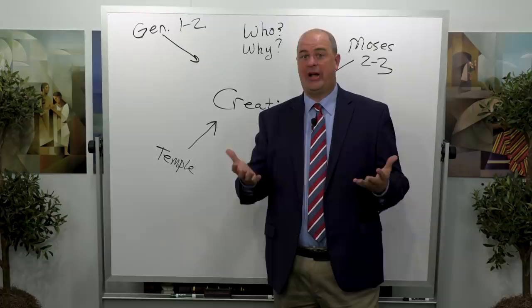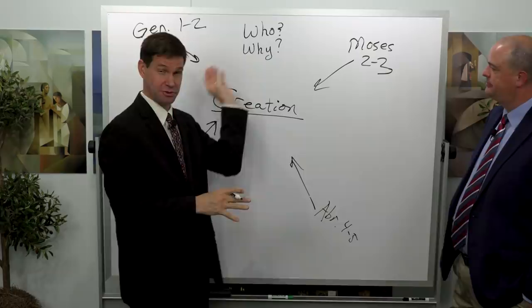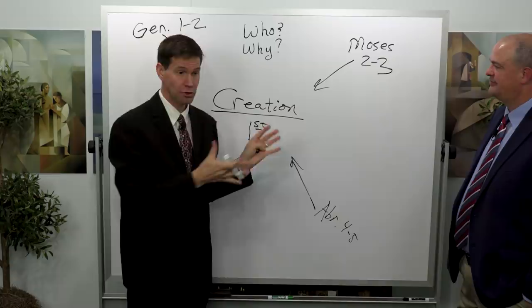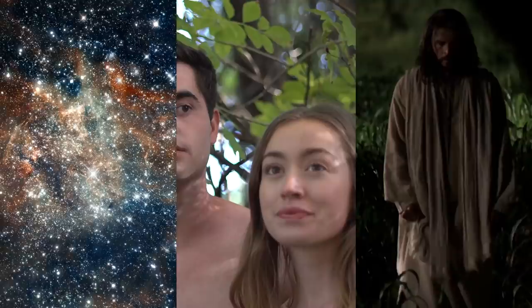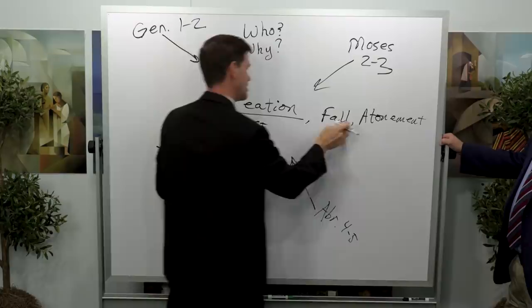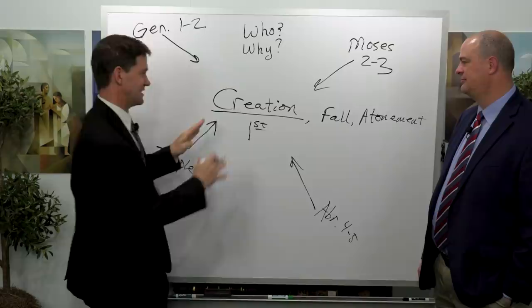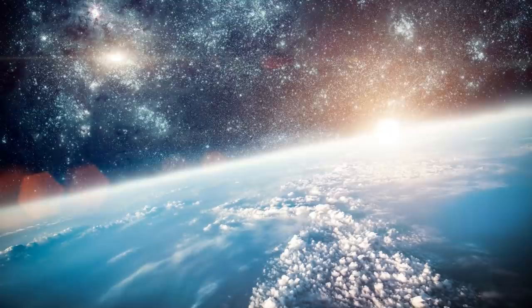Stepping back, what we're putting in place today with these scriptures is the first of three pillars that uphold the entire plan of salvation, put in place long before the foundation of the world. Before we even create the world, God sets these three things in place: the creation, the fall of Adam and Eve, and the infinite atonement of Jesus Christ. Those three pillars are planned out with blueprints — it's all designed — and now we can begin. Now that we have everything in order, we can create the earth.